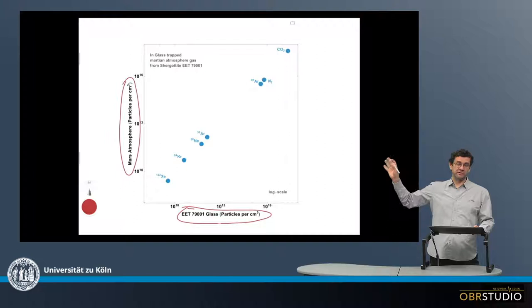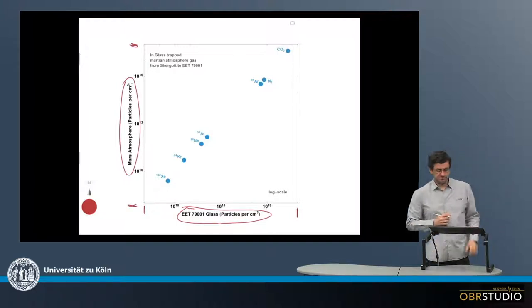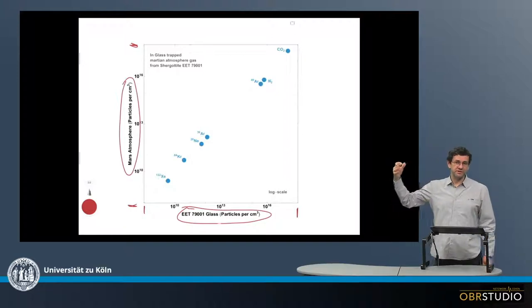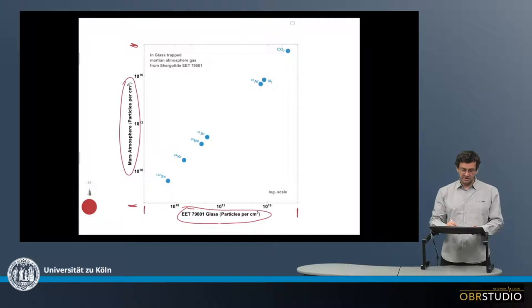Now the scaling here is logarithmic on both axes, and the range is the same on the x-axis as on the y-axis. Which means, as you can see here, the gases, or the composition of the gas in the glass bubbles and the Martian atmosphere are identical, and they plot on a slope one line.